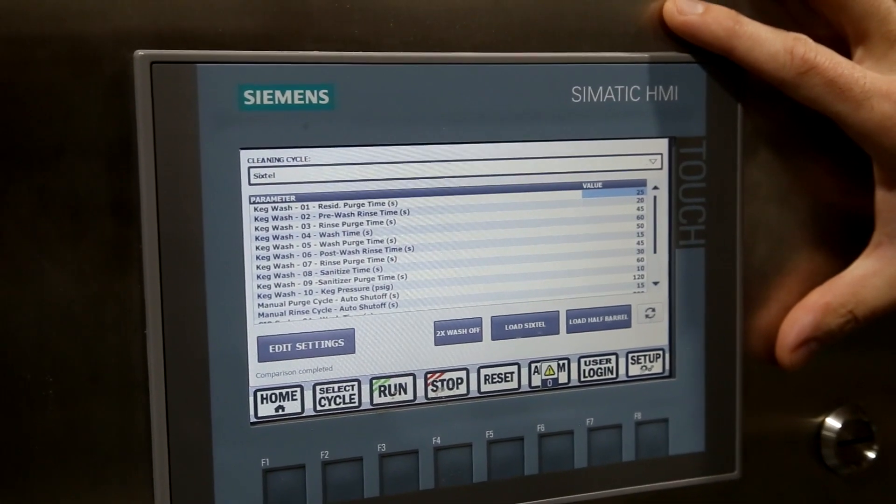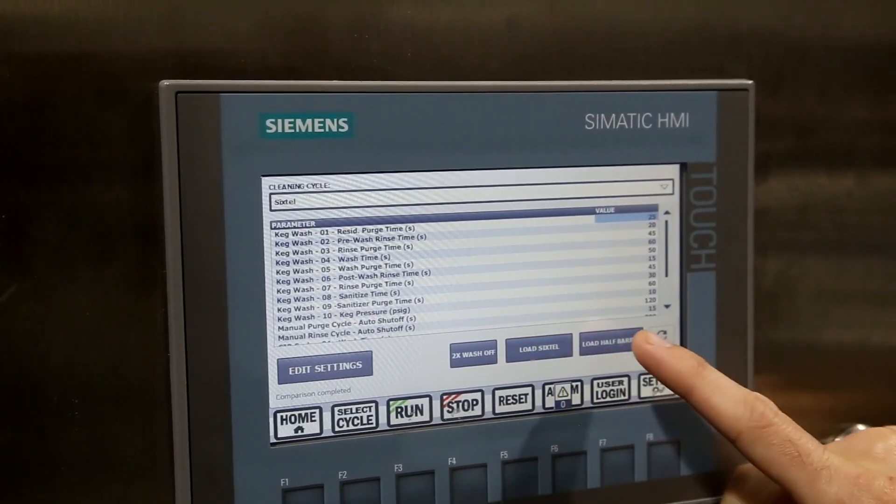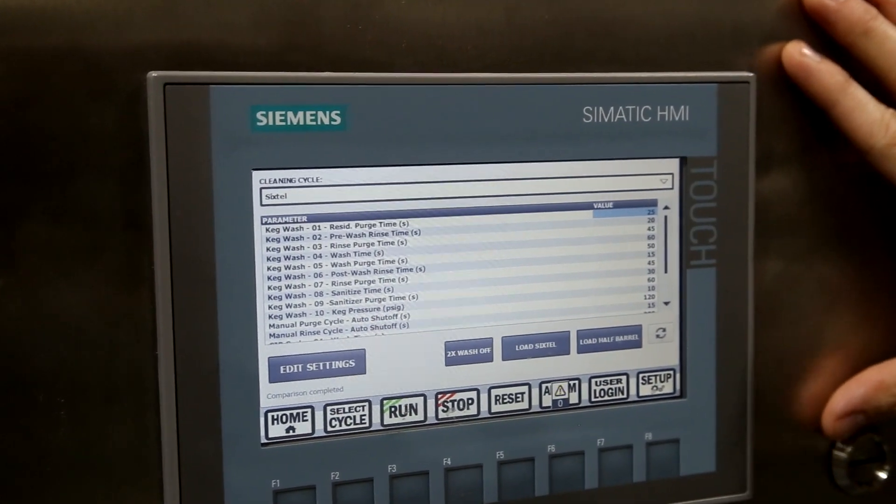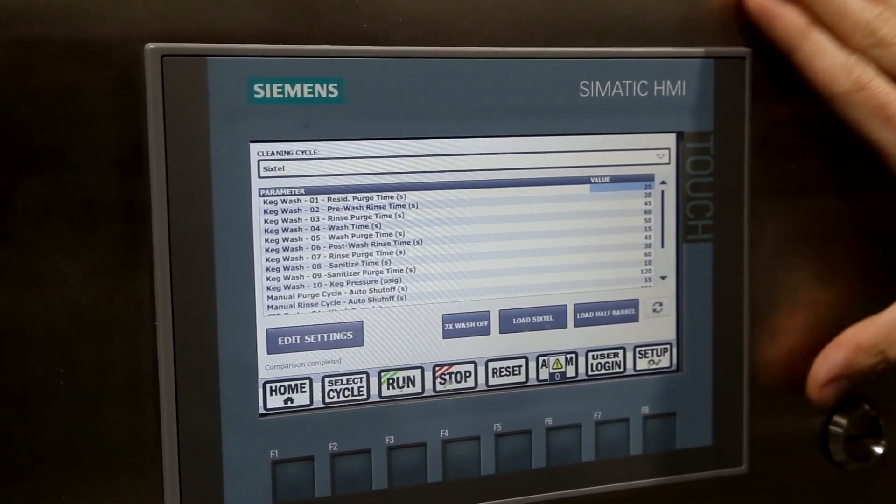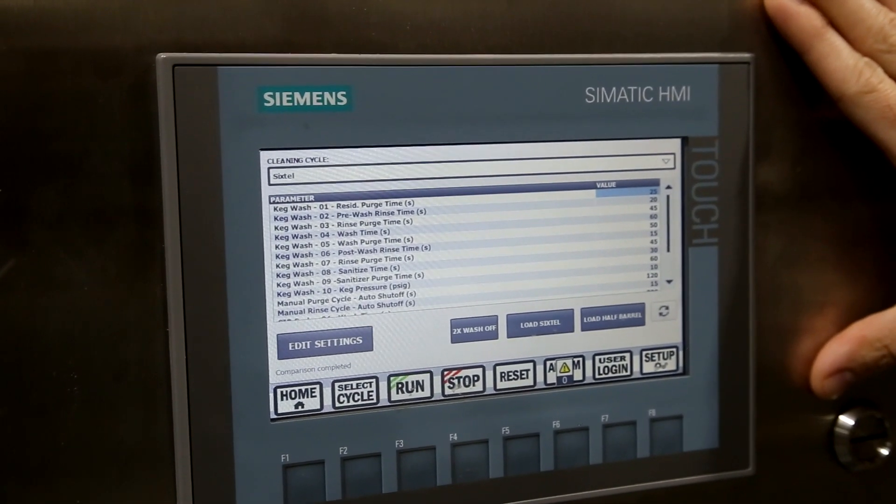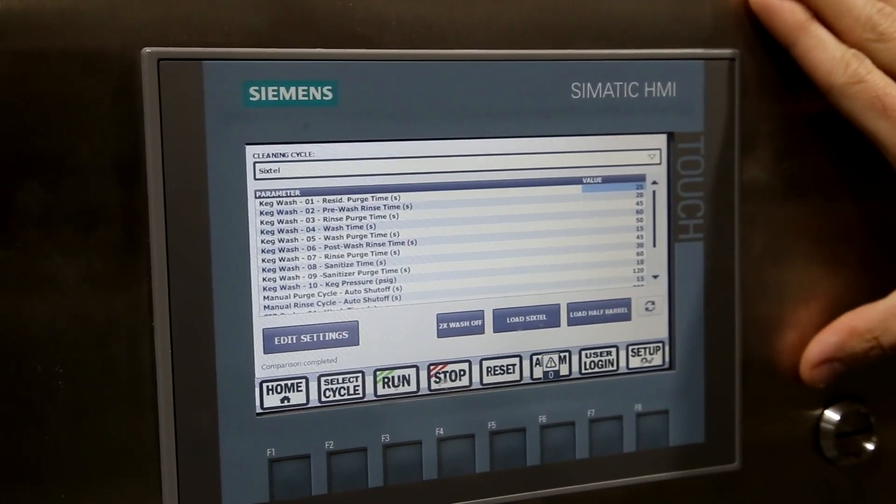On our setup screen you can see we have quick keys for loading sixth fill and half barrel recipes. This is all user assigned recipe parameters for each timing cycle. It's all user adjustable and you can save as new recipes up to a hundred.